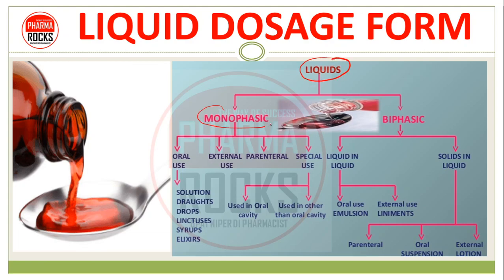तो यह है liquid dosage form का detailed classification. देखें तो monophasic और biphasic — monophasic के अंदर oral use के अंदर solution, draught, drops, linctuses, syrup, elixir वगेरा. External use के preparations — अलग-अलग lotions हैं, liniments वगेरा हैं — वो external preparations. Parenteral है, special use वाले हैं.